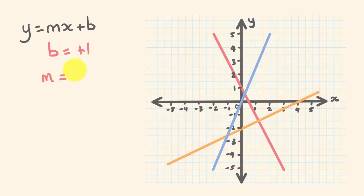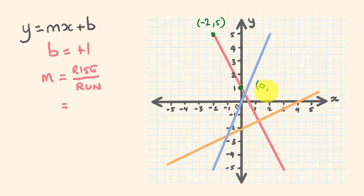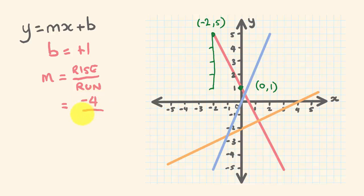Now let's work out the gradient. The gradient is the rise divided by the run. The easiest way is to find points where we've got whole numbers. We have where x is equal to minus 2, y is equal to 5. And at the y-intercept, x is equal to 0 and y is equal to 1. So we can work out how much we've gone up or down and how far we've gone across. As the graph progresses, we've gone down 1, 2, 3, 4 — so the rise is minus 4. And we've gone across 1, 2. So the rise over the run is minus 4 over 2, which equals minus 2.